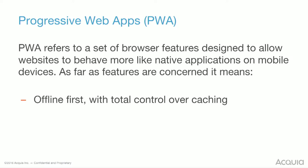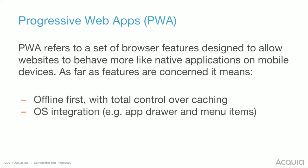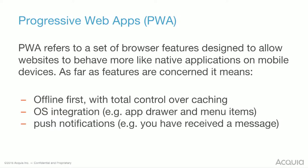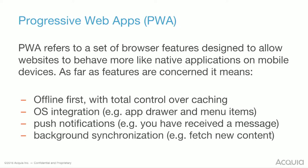As far as what that means feature-wise, you've got offline first. Traditionally, if you're on a web browser and you go to a website and there's no internet, you don't have a good time. There is OS integration, so it feels more like a native app with things such as app drawers and menu items. You get push notifications — say you're operating a news site and there's breaking news in your area, potentially this might be useful. And potentially it might be more useful to synchronize some stuff in the background when you don't even have the website open.